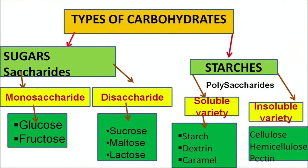Carbohydrates in diet provide 60 to 80% of our energy — they are the major source of energy. Carbohydrates are divided into two major categories: sugars and starches. Sugars are further divided into monosaccharides and disaccharides. Starches are divided into soluble and insoluble varieties. Monosaccharides include glucose and fructose. Disaccharides include sucrose, maltose and lactose. Soluble starches include starch, dextrin and caramel; insoluble varieties include cellulose and hemicellulose.